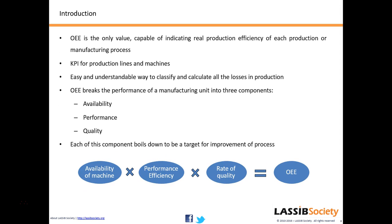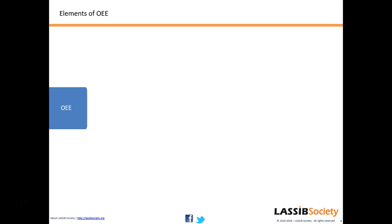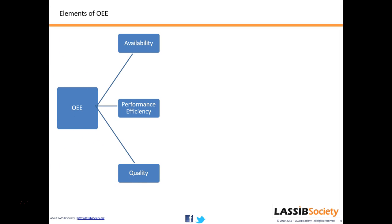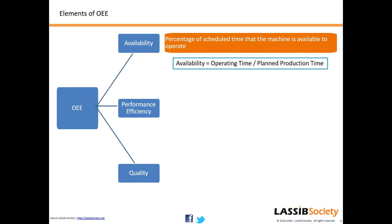When we talk about OEE, we break it into three parts: it comprises Availability, Performance, and Quality. Getting deeper — Availability talks about the total operating time that you have versus the planned production time. It is a ratio between total operating time and whatever time you have planned for production.